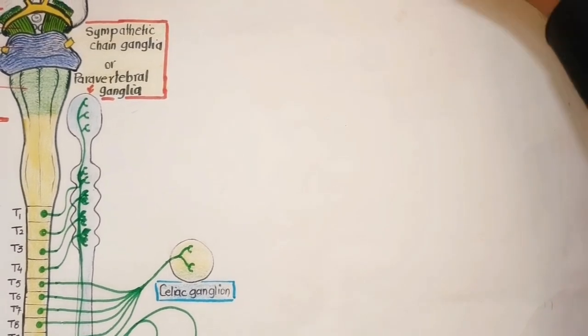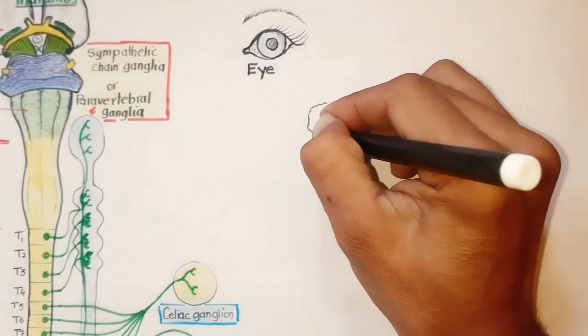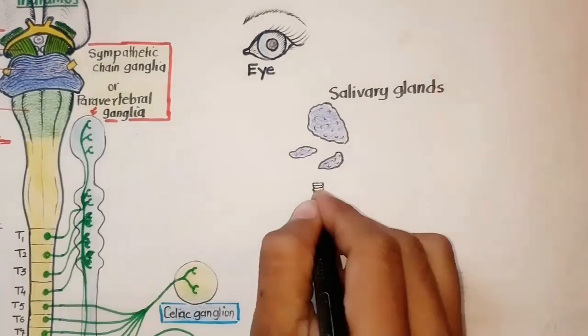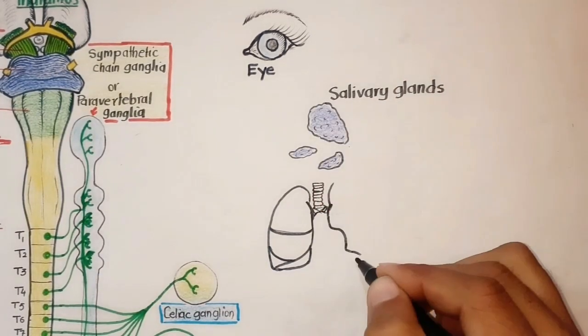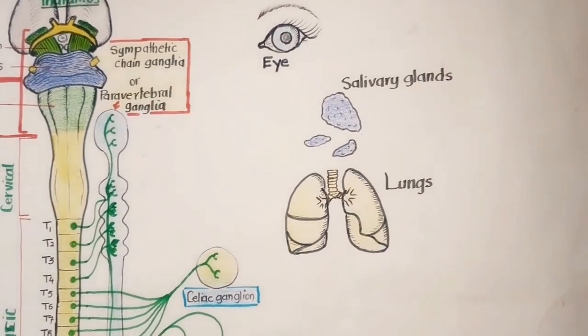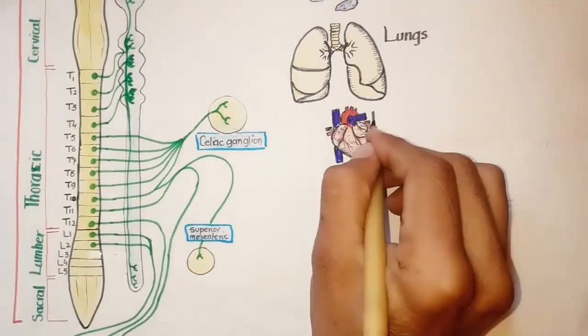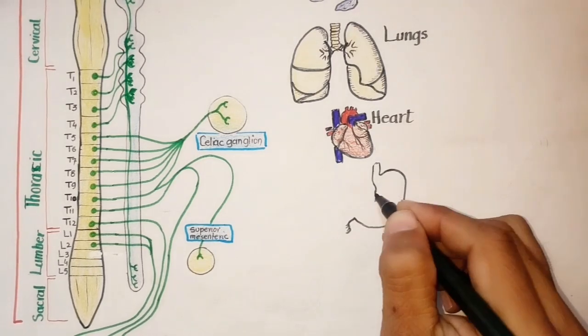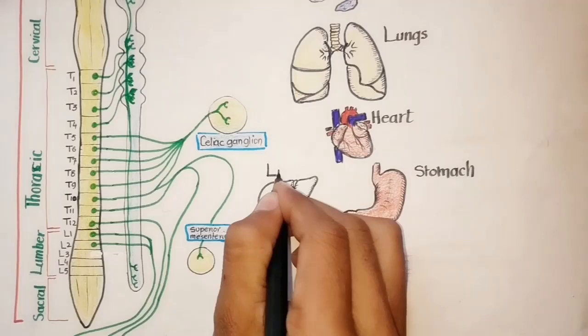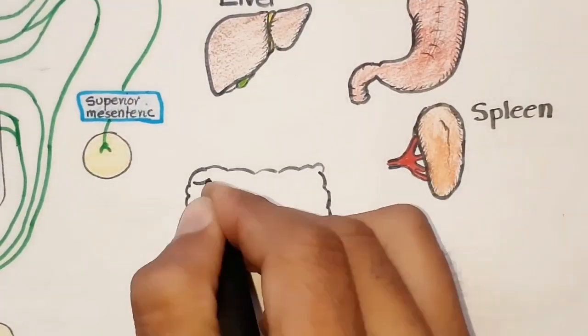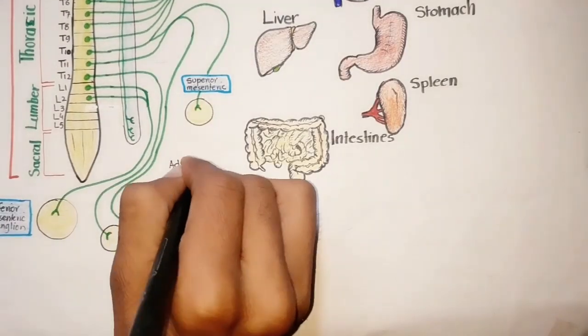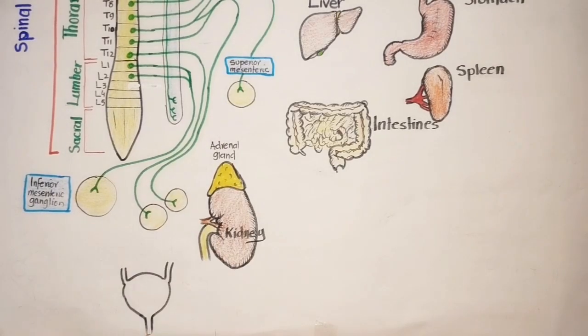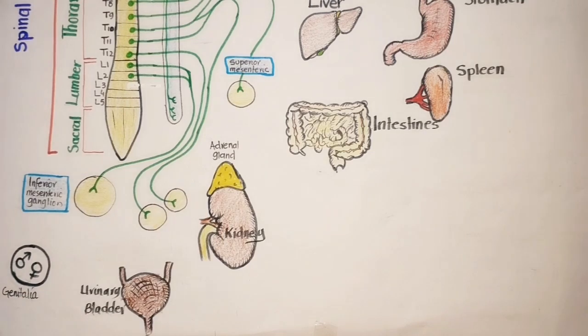Now let's briefly overview some organs and tissues innervated by the sympathetic nervous system and how they respond to it. These organs and tissues include the eyes, the salivary glands which secrete saliva to our oral cavity, the lungs and related airways, the heart, and other organs like the stomach, liver, spleen, large and small intestines, adrenal medulla, kidneys, urinary bladder, genital organs, and blood vessels.